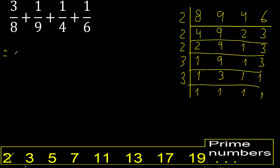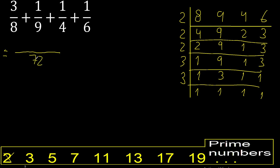Therefore finish. Multiply 2, multiply by 2 is 4, multiply by 2 is 8. 3, multiply by 3 is 9. 8 multiply by 9 is 72. Okay.